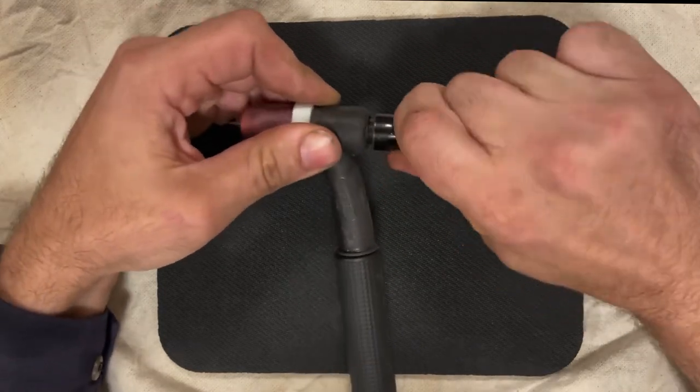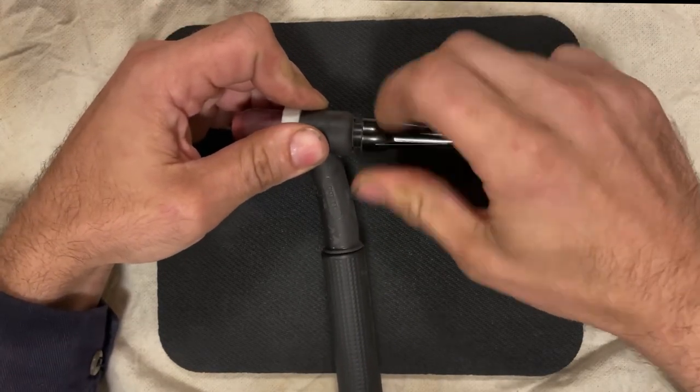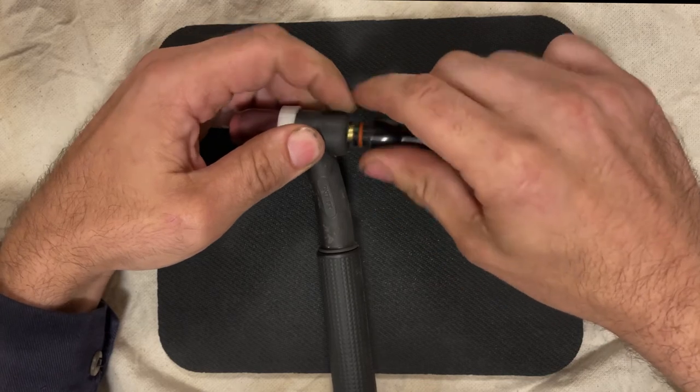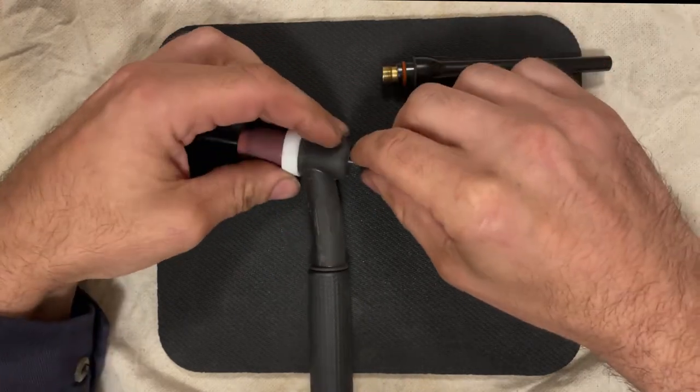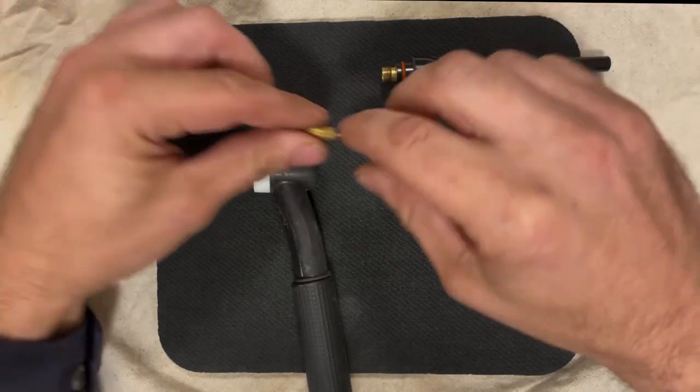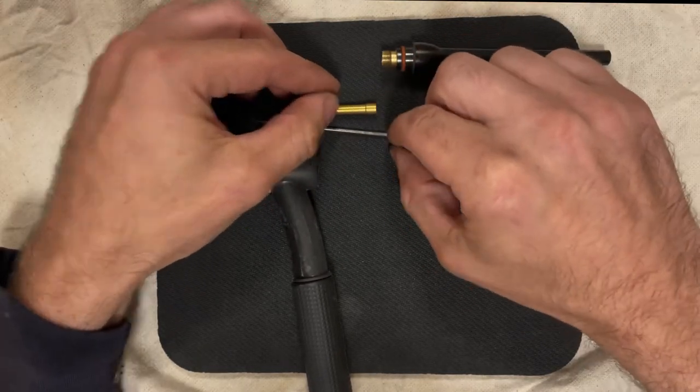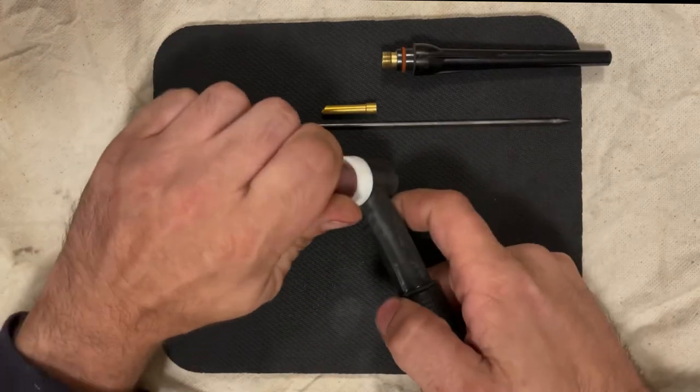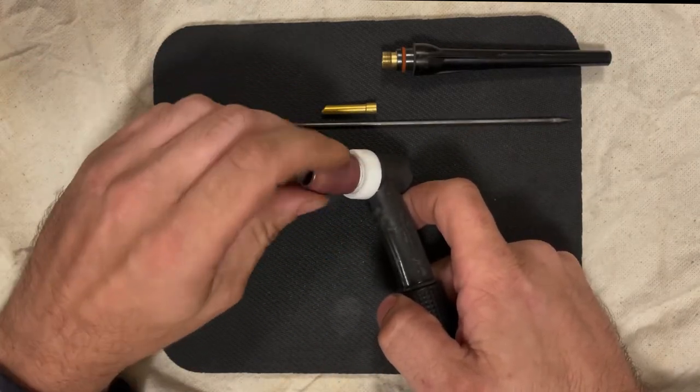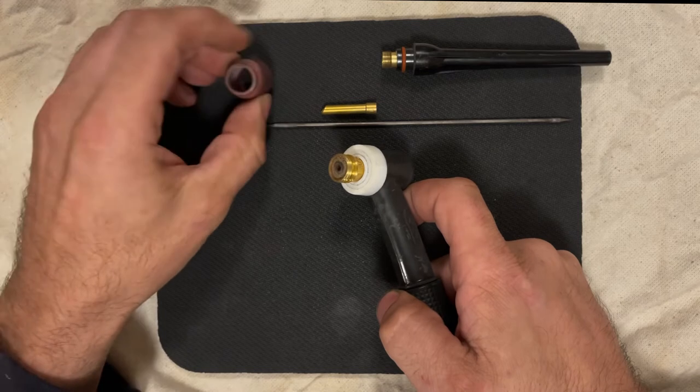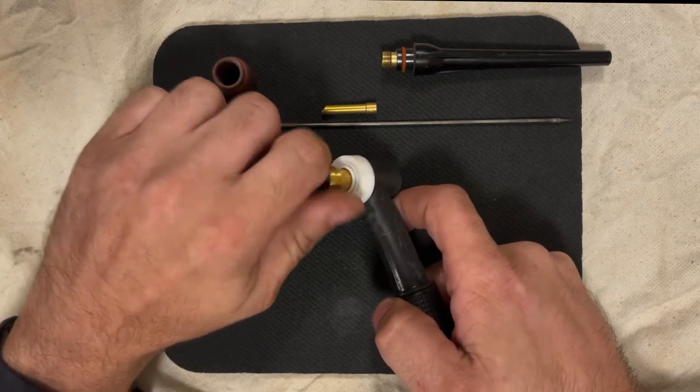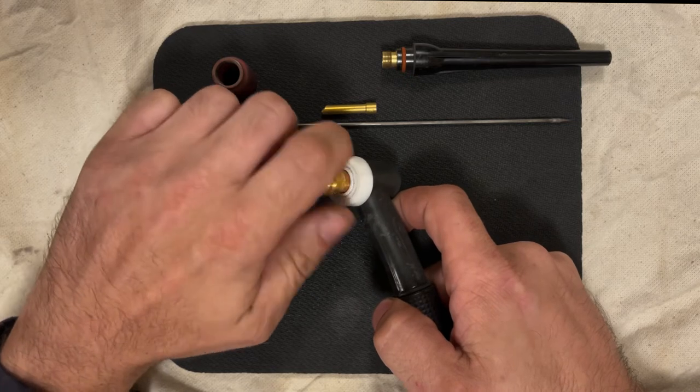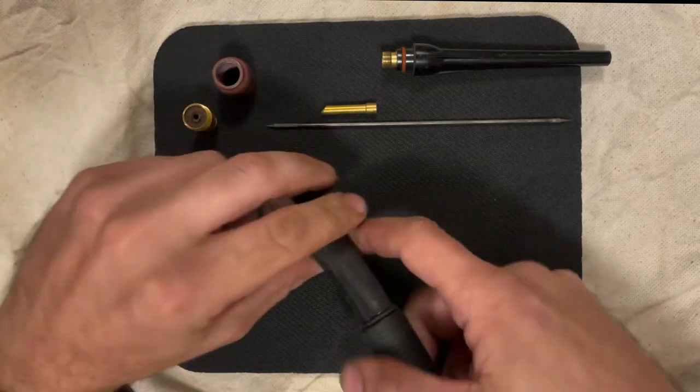I'm taking the back cap off. This back cap presses on a collet in order to hold the tungsten in place, and it also forms a seal. You have your tungsten here, your collet here. I'm going to unscrew this cup, this is your ceramic cup. And then here we have a gas lens that I'm unscrewing.